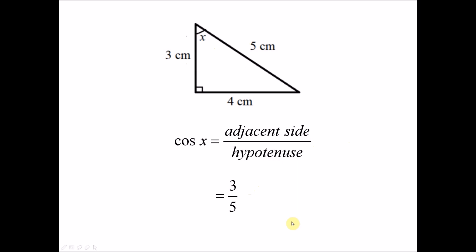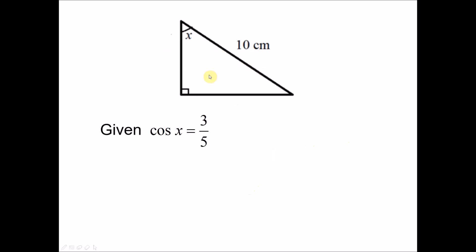What if you are given a right angle triangle with only the value of the length of one side, and then you are given the value of the cosine of angle x, and you need to find the length of another side? That is what we are going to learn today.